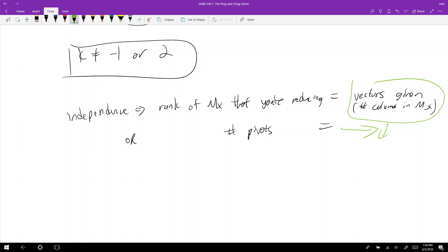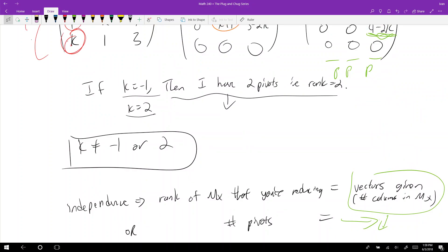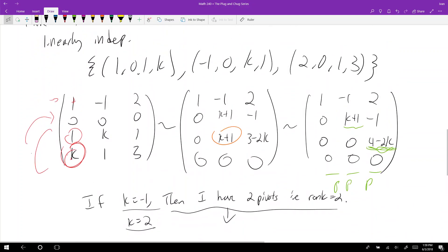So yeah, that's how you determine if an unknown value—like what an unknown value can take on—in order for a matrix to be linearly independent, or a set of vectors to be linearly independent. All right.